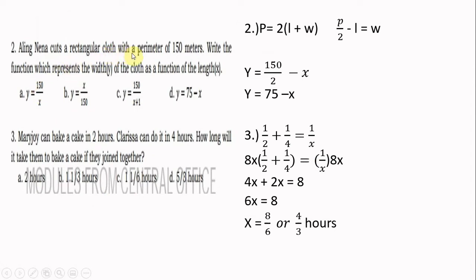Number two: Alignina cuts a rectangular cloth with a perimeter of 150 meters. Write a function which represents the width Y of the cloth as a function of the length X. We will be finding the width given the length, so we write first the formula of the perimeter: perimeter equals twice the sum of length and width.